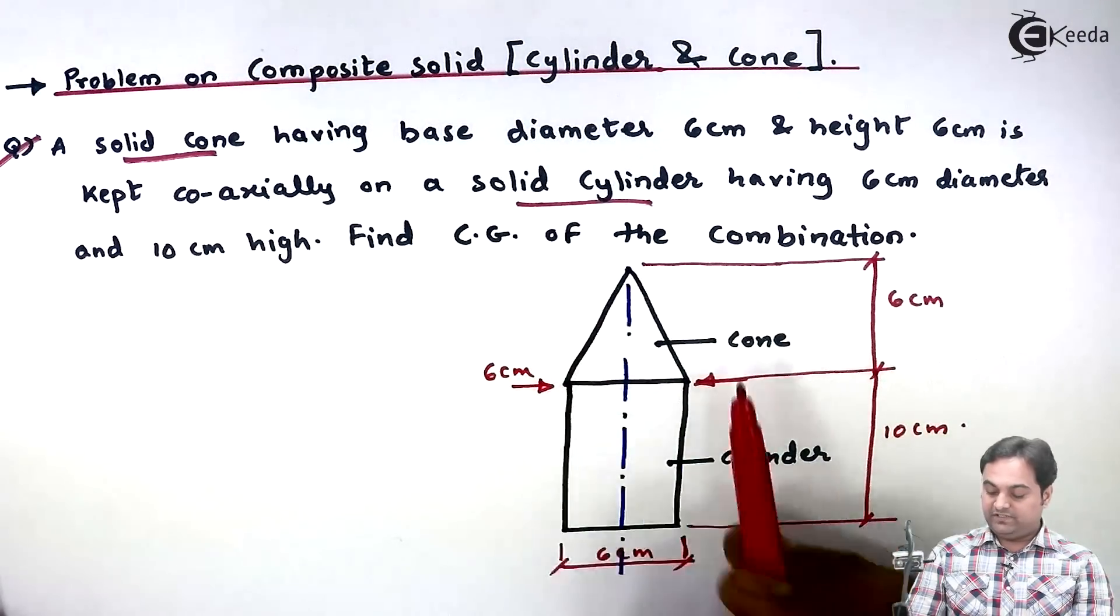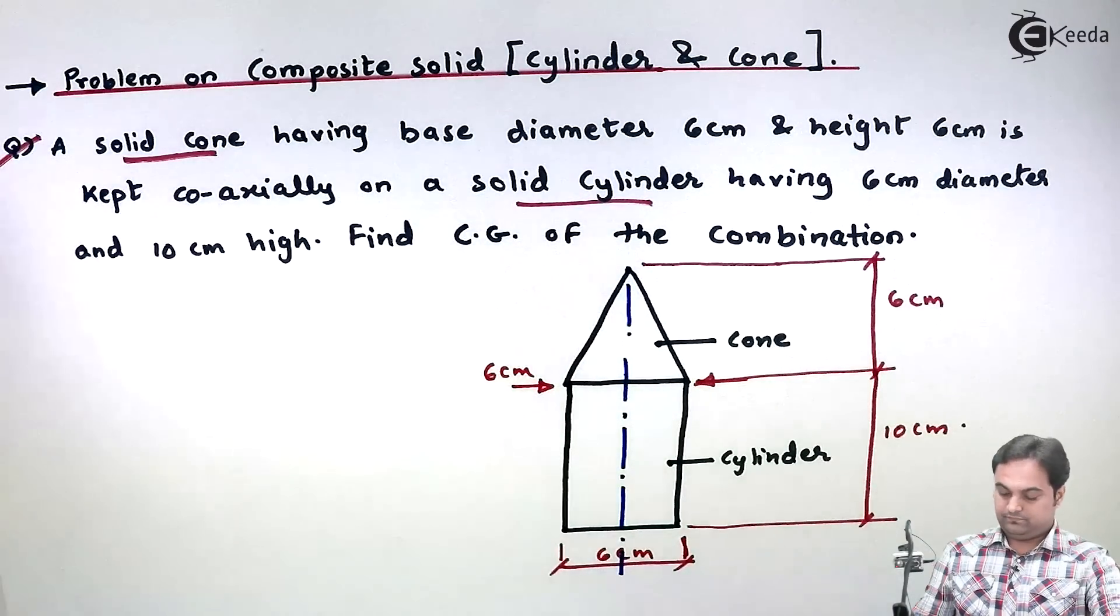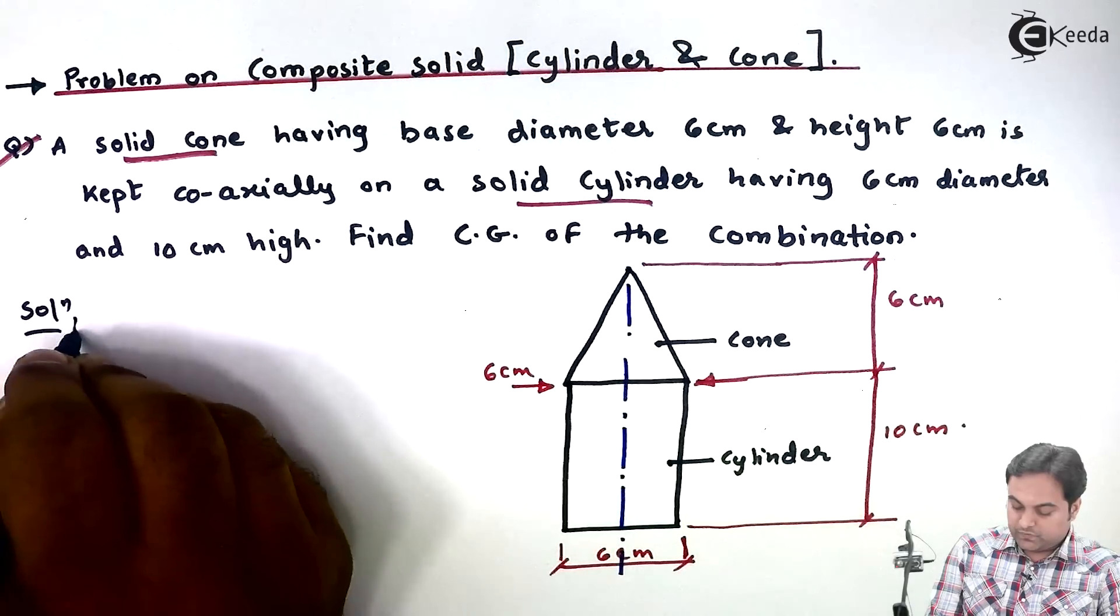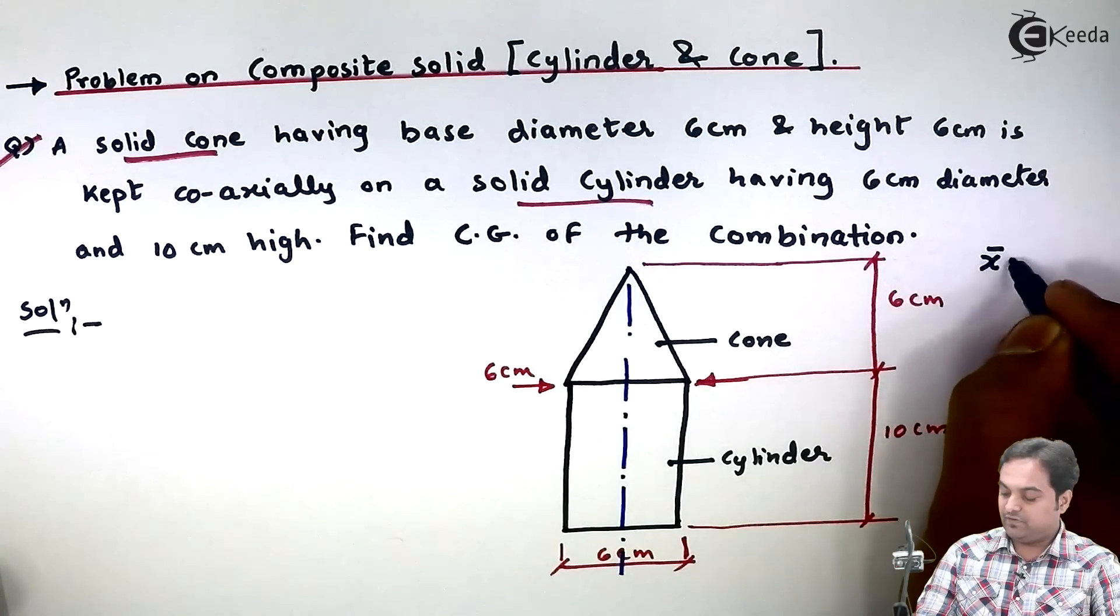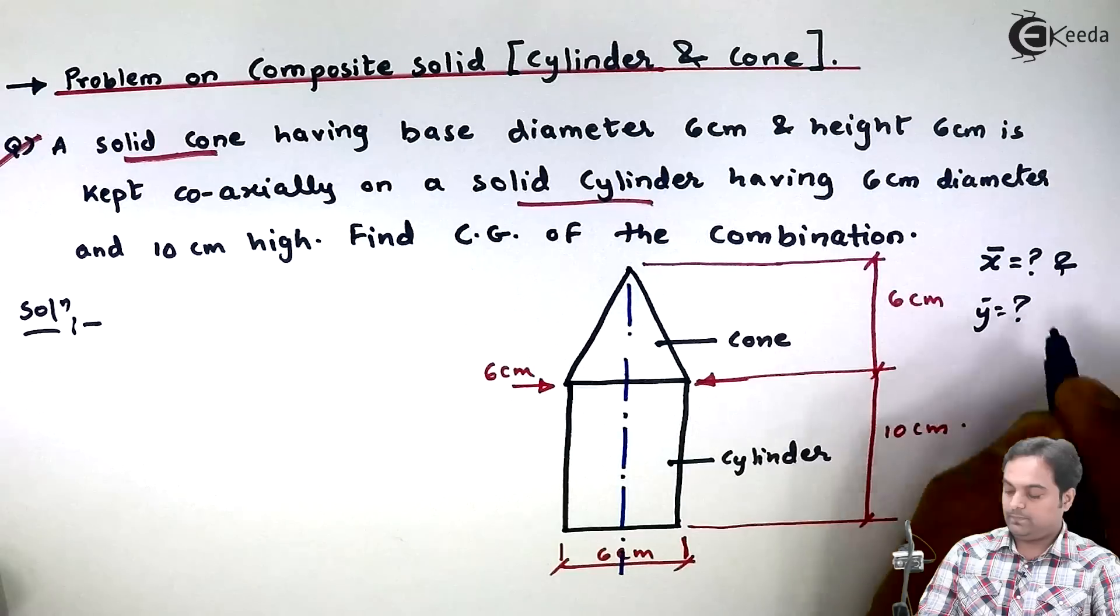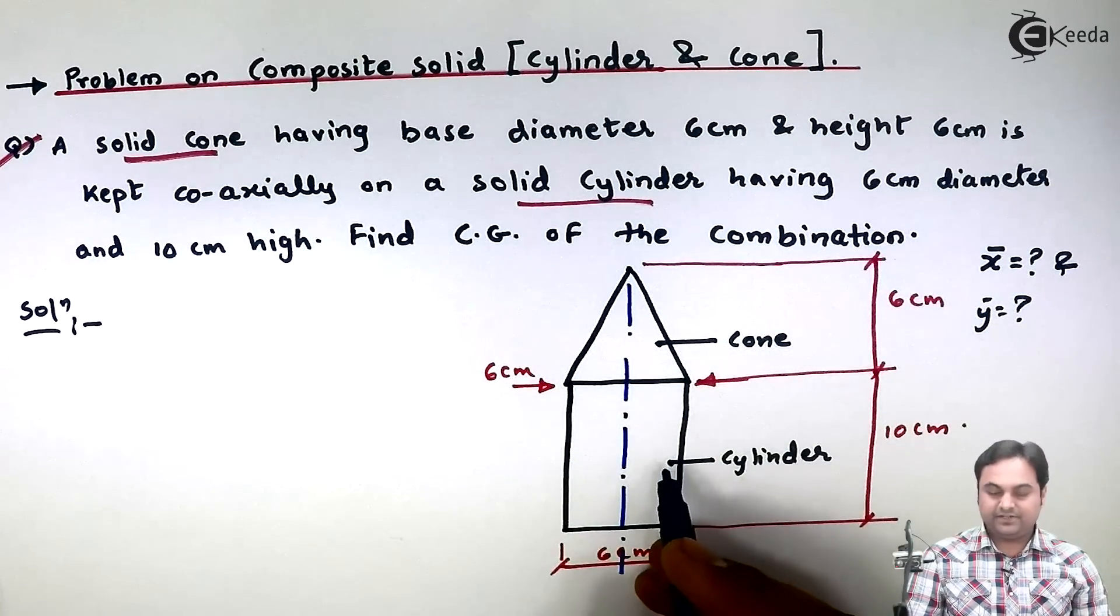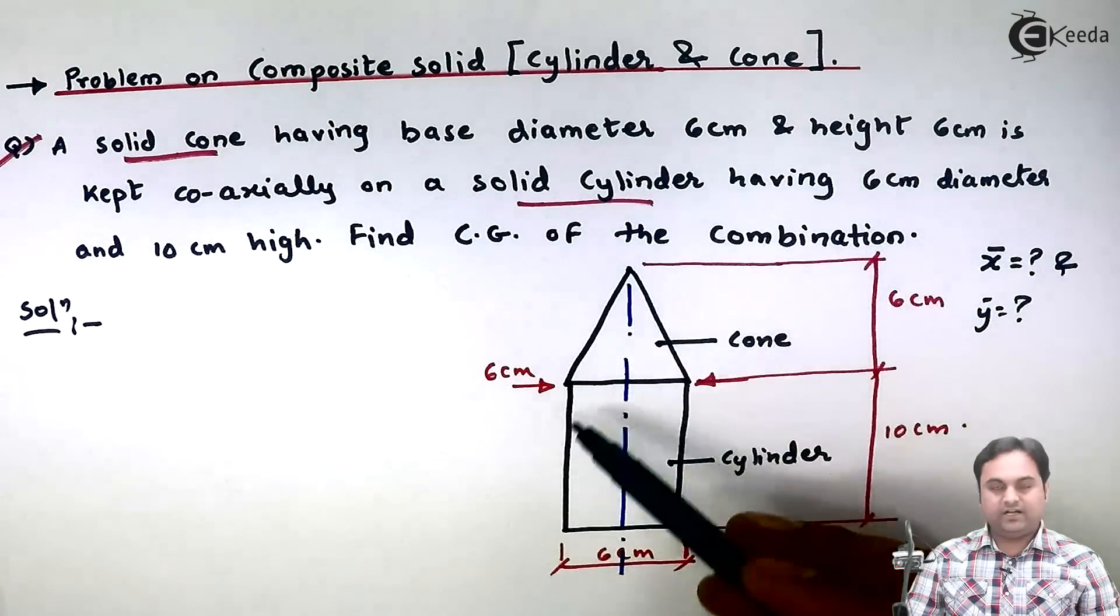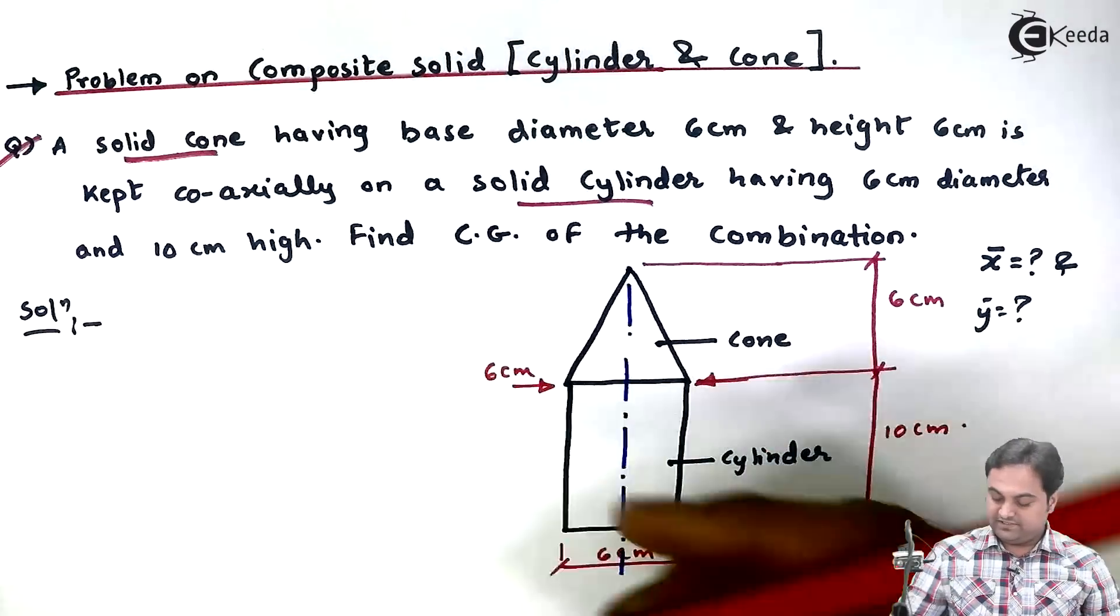Here we have to find the CG of the combination, that is center of gravity. So when they are saying to find CG, it means we have to get the CG in the form of X bar and Y bar location. So how to get this? I'll consider the cylinder as the first solid and cone as the second solid. So first I'll place it on an axis system.